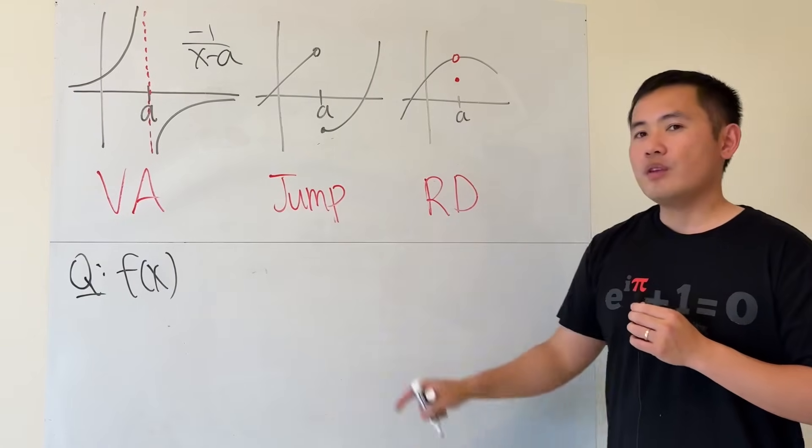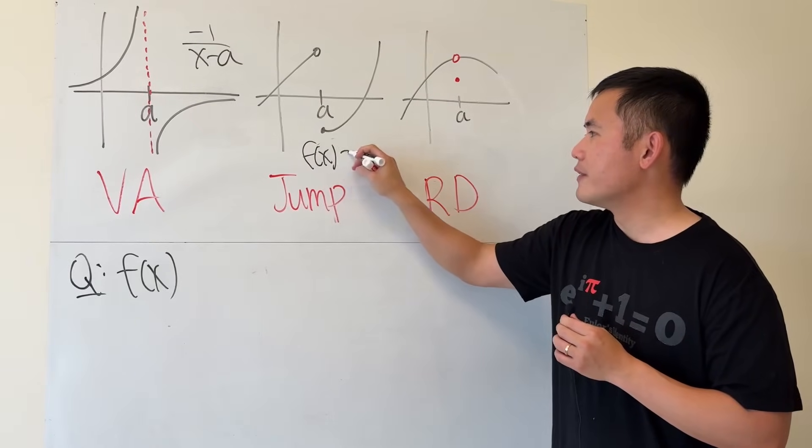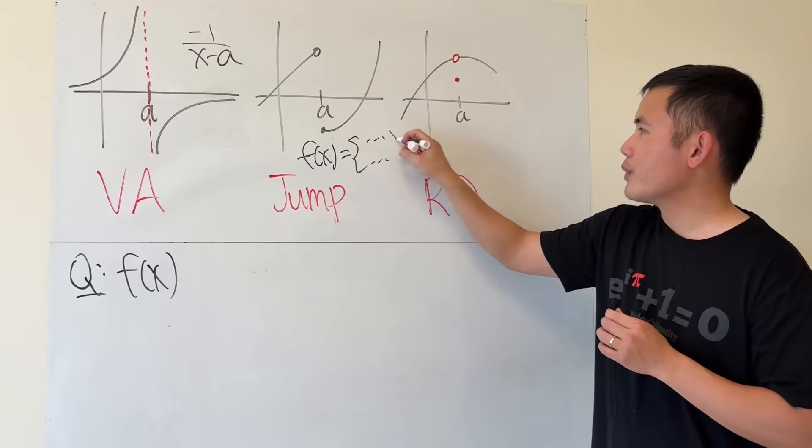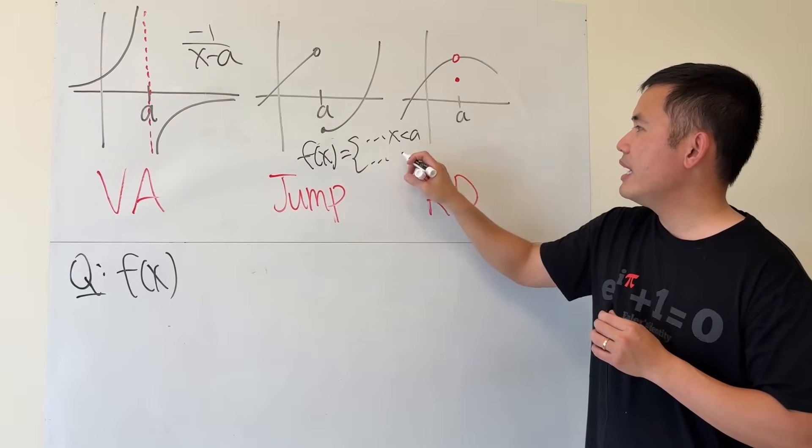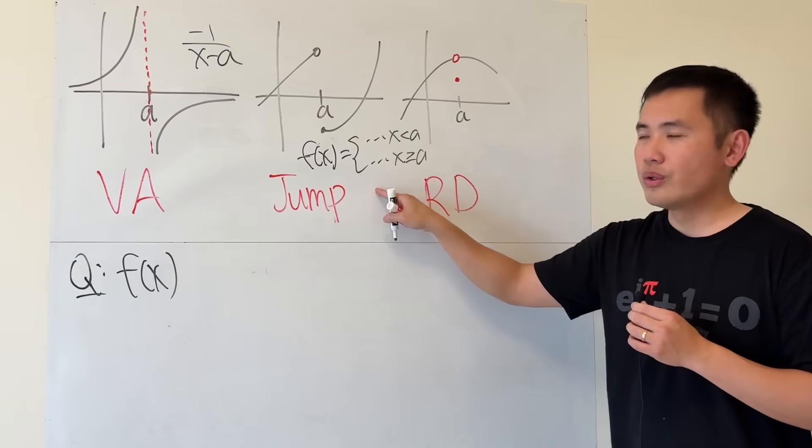Next one, when you have a jump, it's usually that we have a piecewise definition of a function. And just be careful at the x value. So x less than a and x greater than or equal to a, then depending on how you want to define the function, this is like a linear, this is like a parabola.